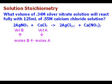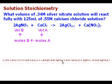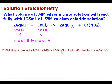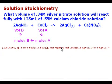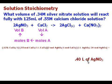Here's what it looks like. Take a second and look that over. Put it in your calculator and we should get 0.40 liters of silver nitrate. That's also 400 milliliters.